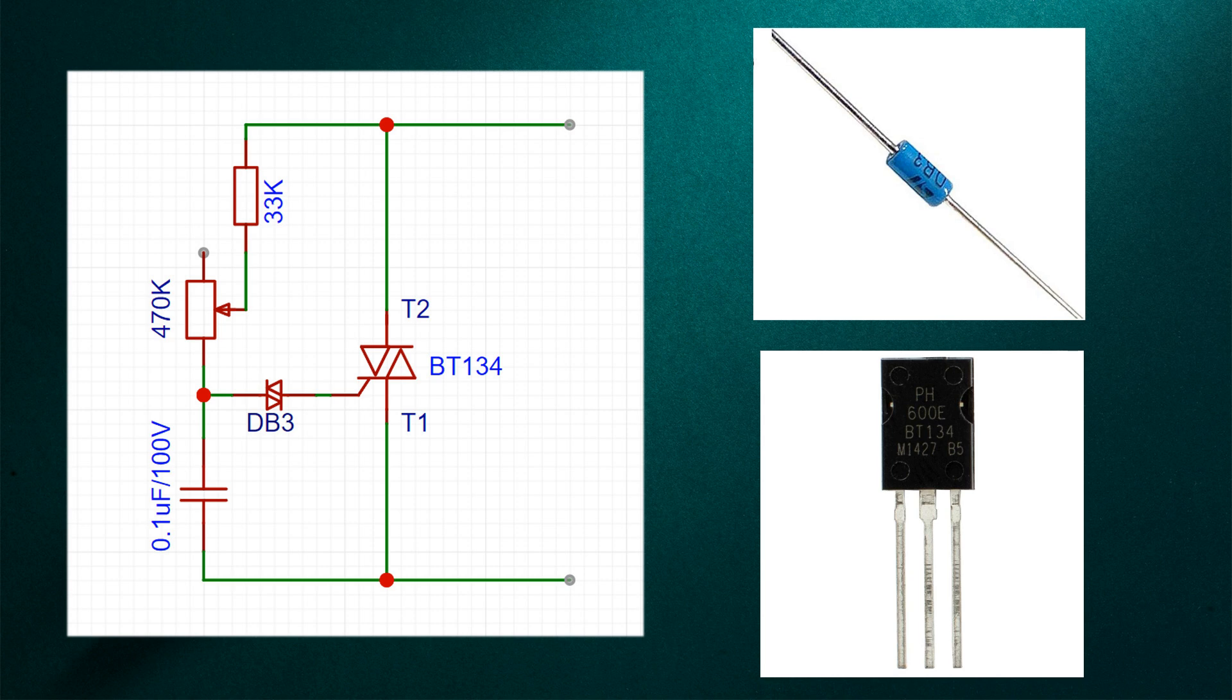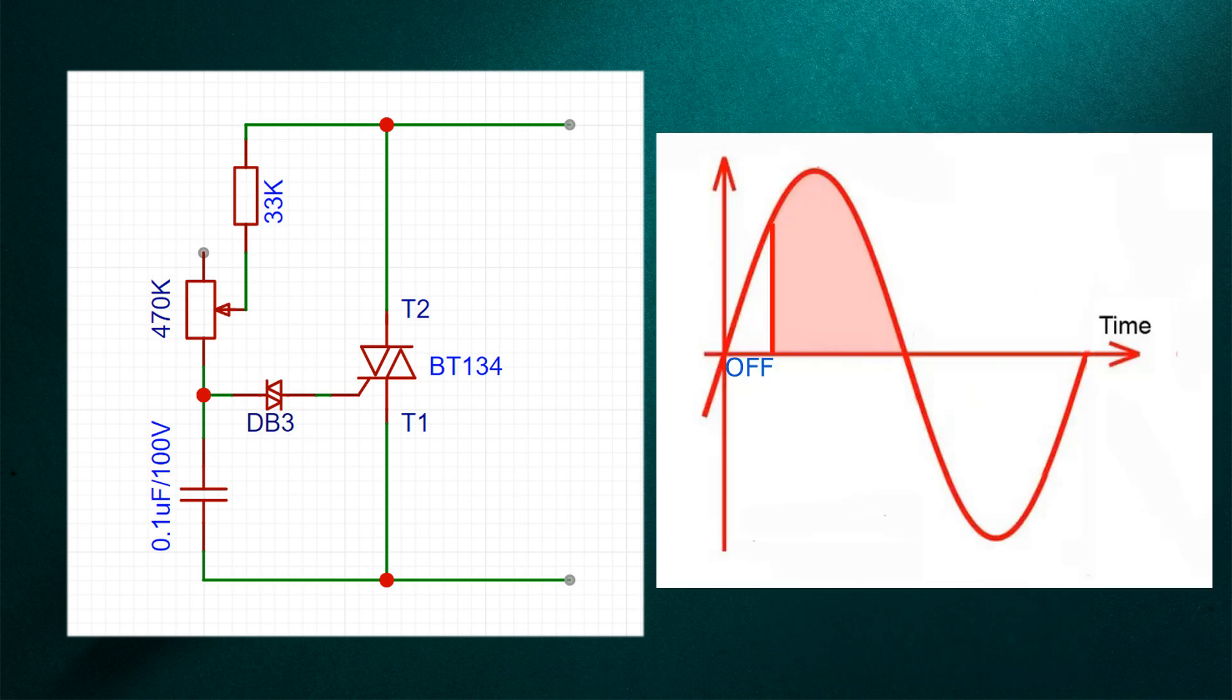In this type of regulator, the triac remains off for a specific duration and then becomes on for another specific duration. This causes reduced voltage across the fan and hence speed reduces.